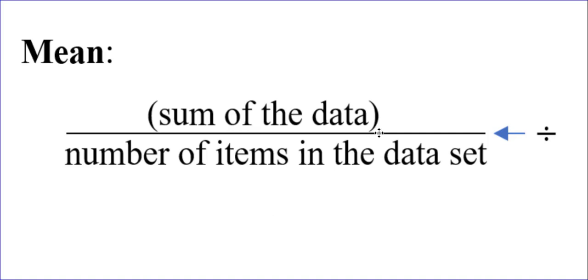Let's start with the mean. The mean is when you take the sum of all the data, adding them all up, and then dividing by, that's what this big fraction bar is, a division symbol, dividing by the number of items in the data set.